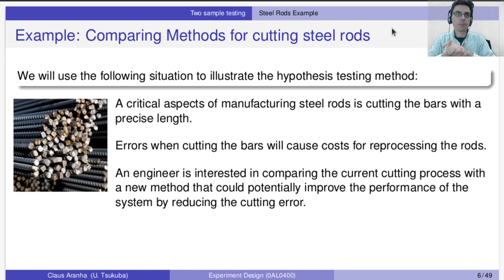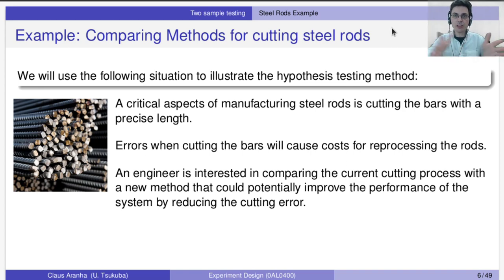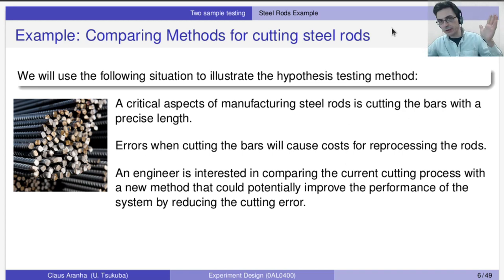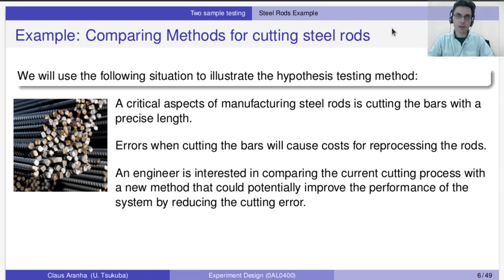Let's use a concrete example to illustrate the calculation. Say we have a steel factory where one step is cutting steel rods to a fixed size — every rod should be exactly 50 meters. However, the machine does not cut exactly 50 meters; sometimes it's one centimeter short, sometimes one centimeter long. There is naturally a little error, and you want to minimize it. Imagine an engineer wants to create a new cutting process that, according to the engineer, has a smaller cutting error. How would you design the experiment for that?